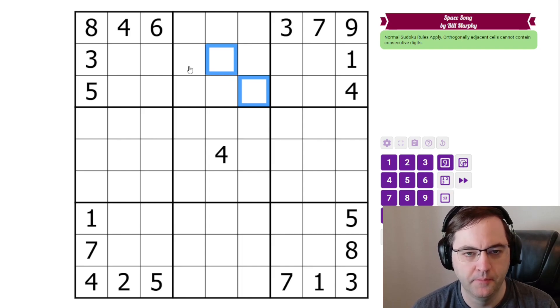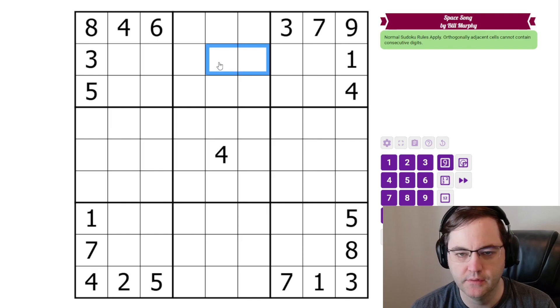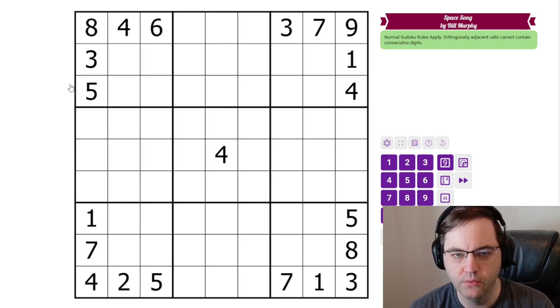So we can't put a 7, 8 here, for example. These are consecutive. Diagonal is fine. No problem there. Just orthogonally adjacent. Those are the rules.